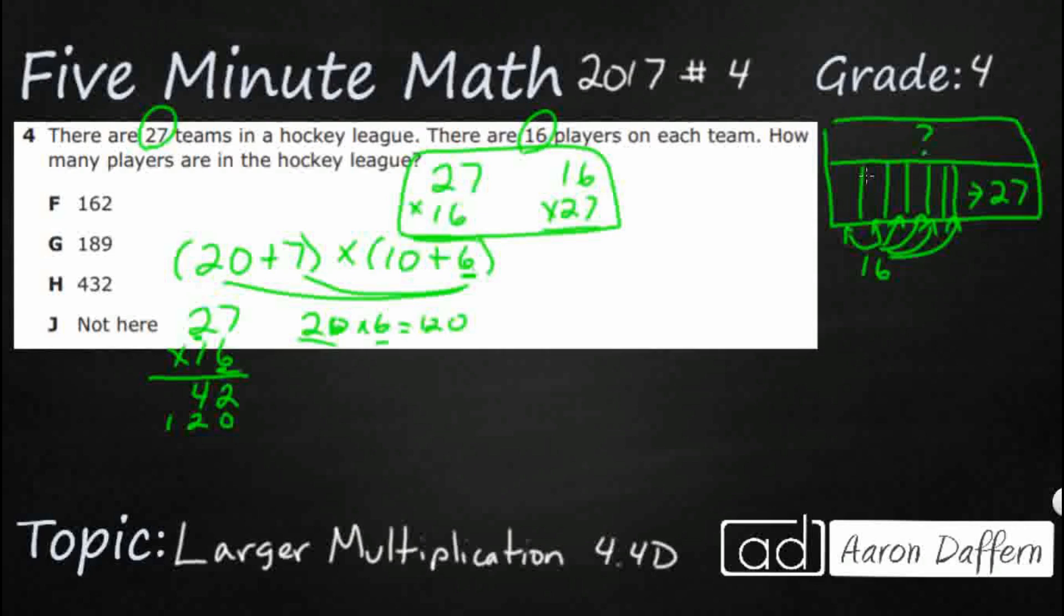Now I'm going to go to this 1 in the 16. You always multiply from the bottom up. But that 1 is really a 10. And I'm going to multiply this 10 by 7 and then the 10 by the 20. So 10 by 7, that's pretty easy. That's 70.